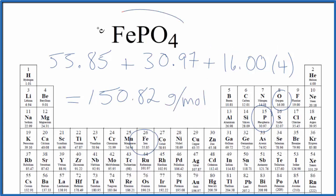That means if we have one mole of iron-3-phosphate, we're going to have a mass of 150.82 grams.